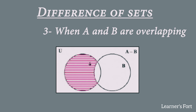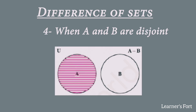The fourth case is when A and B are disjoint sets and we perform A minus B. Since there are no common elements between them, nothing is subtracted from A. The resulting answer is the entire set A. So we shade only set A in this case.